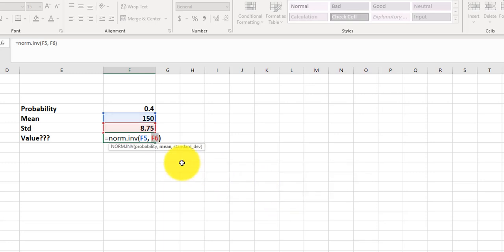It says too few arguments. What did I do there? Oh, I skipped the probability. I need the probability, the mean, and the standard deviation. So let me just retype that. Sorry about that. So I need the probability, which was the 0.4, and then the mean, which is the 150, and then the standard deviation is the 8.75. Now I have 1, 2, 3 items. I press enter.